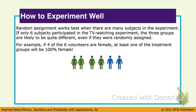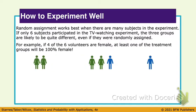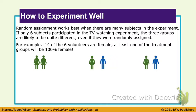Random assignment works best when there are many subjects in the experiment. If only six people were in this particular TV watching experiment, then the three groups would be pretty different. I might have a boy and a girl in two of the groups and two girls in one of the groups. So you want to be careful about having a small sample when trying to ensure good random assignment.